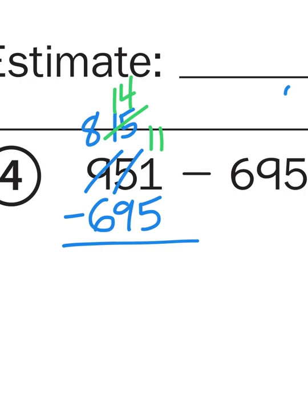800 plus 140 plus 11. That's 951. So now I subtract. 11 minus 5 is 6. 14 minus 9 is 5. And 8 minus 6 is 2. So that's my answer.